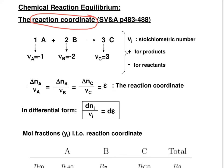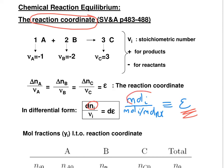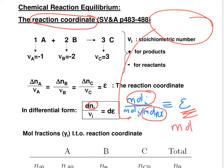A few additional comments: the stoichiometric number is not dimensionless. It has units of moles of that component per mole of reaction. For A, it is minus 1 mole of A per mole of reaction. The units of the reaction coordinate epsilon are therefore moles of component i divided by the stoichiometric number units, giving units of mole reaction.